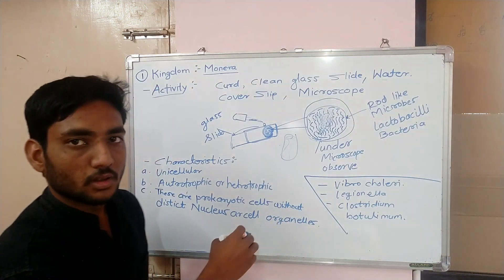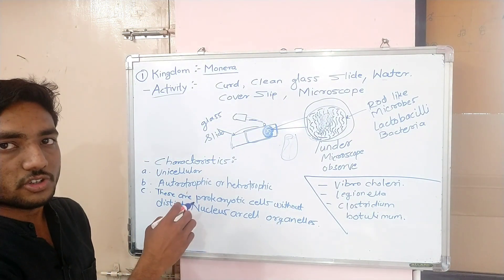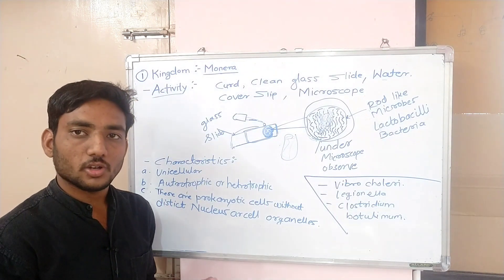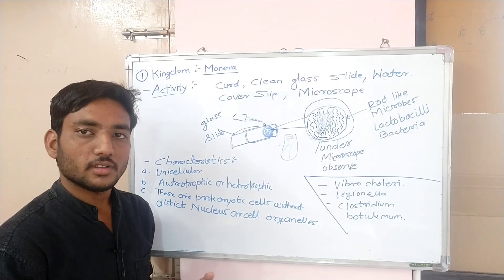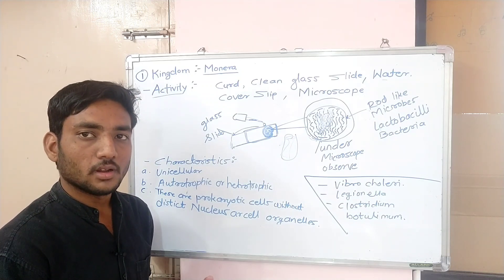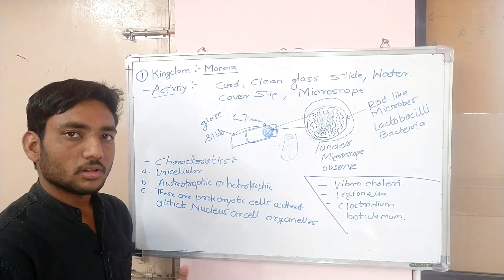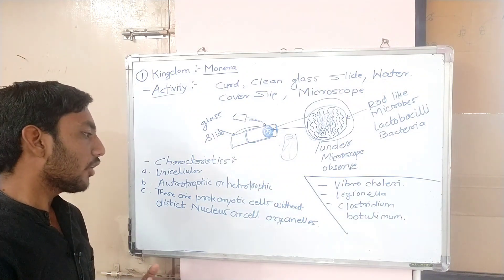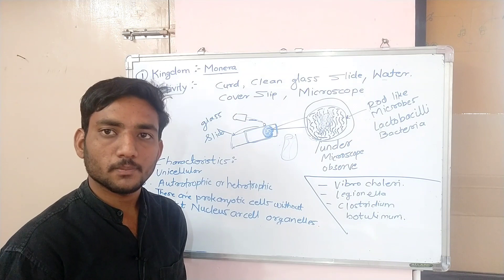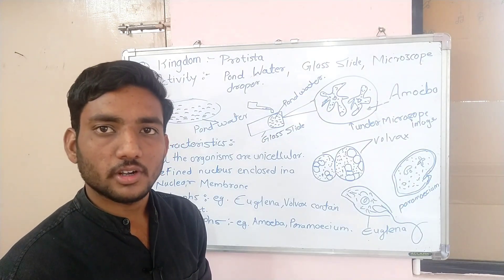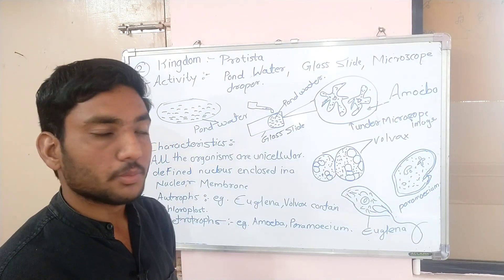Characteristics: first characteristic is unicellular single cell organelles. Second is heterotrophic and autotrophic. Third is these are prokaryotic cells without distinct nucleus cell organelles.